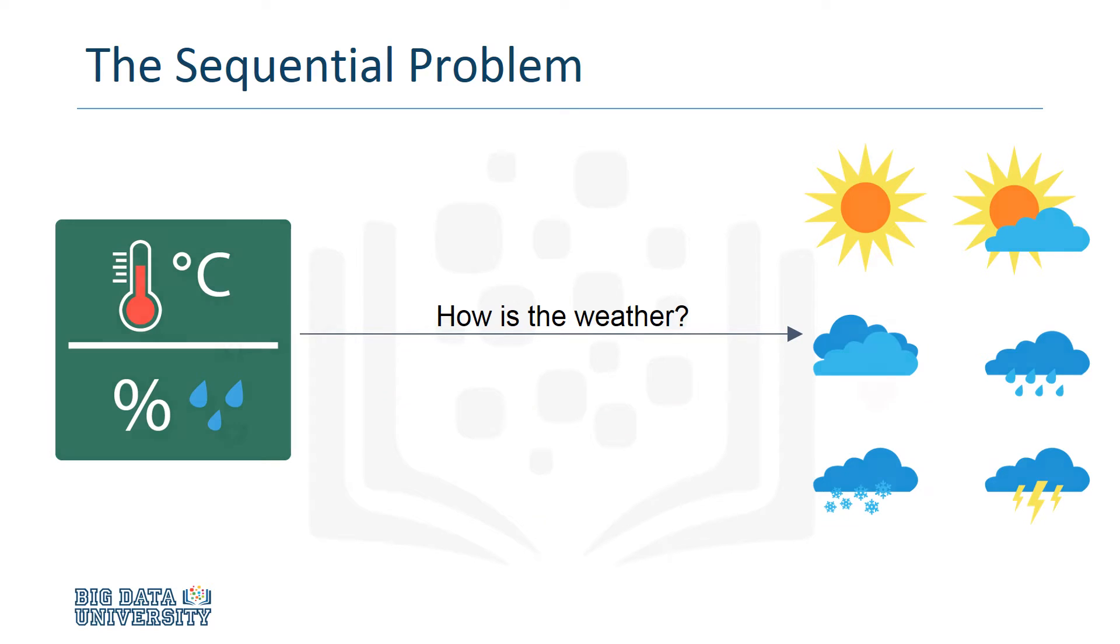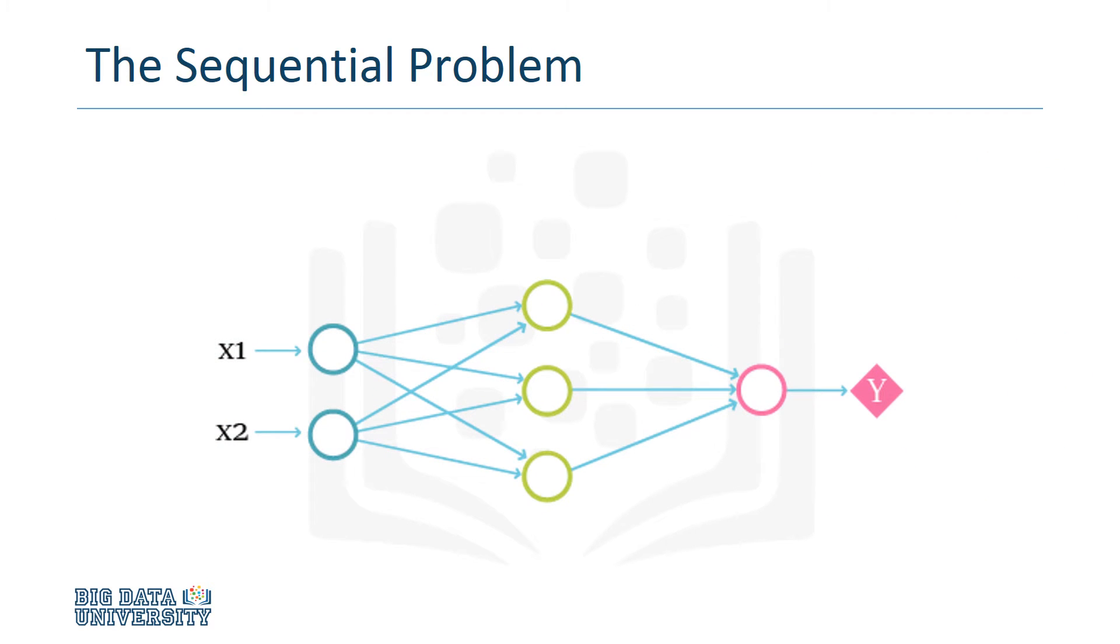This is a straightforward task for the neural network. Using our data set, we first feed a data point into the input layer. The data then flows to the hidden layer, where the weights and biases are applied. The output layer classifies the results from the hidden layer, and then produces the final prediction.